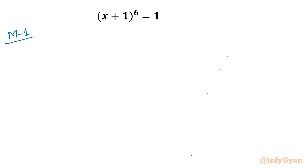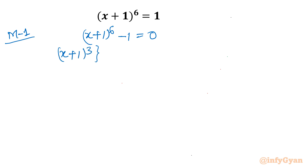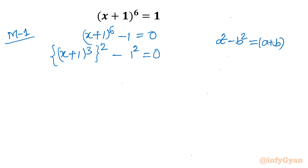This method is from algebra, using algebraic identities. I will write all terms to one side: x plus 1 whole power 6 minus 1 equal to 0. Then I will write the exponent as a whole cube squared, minus 1 squared. The difference of squares formula applies: a squared minus b squared equals a plus b times a minus b.